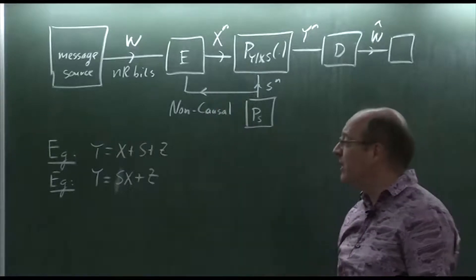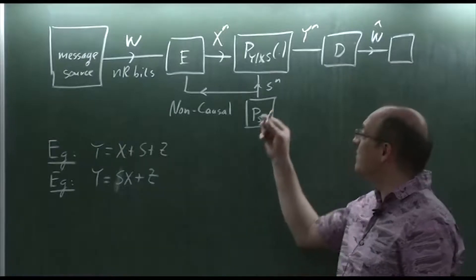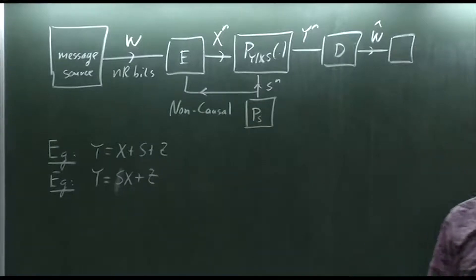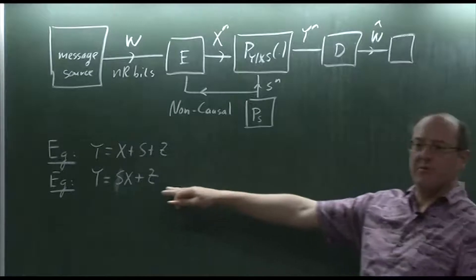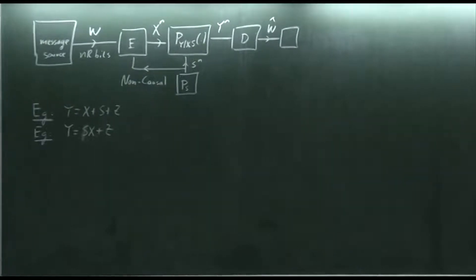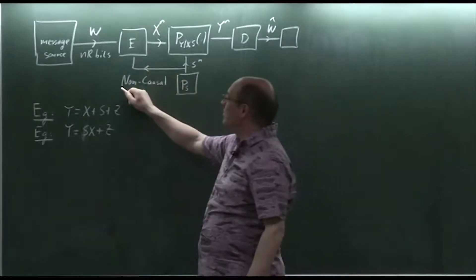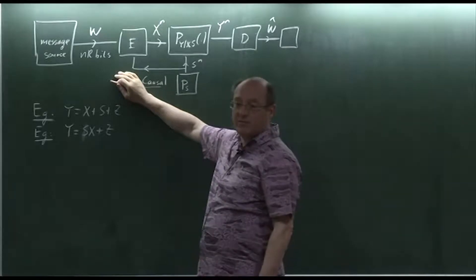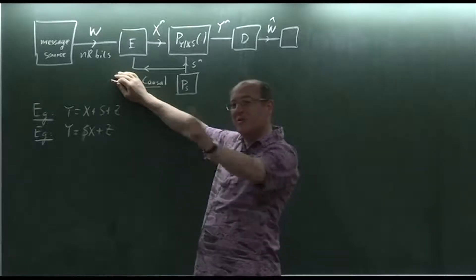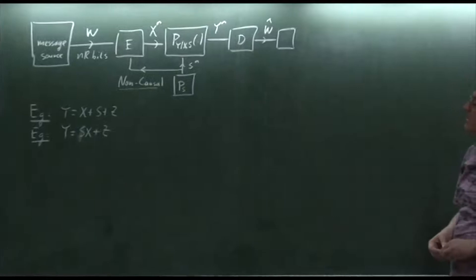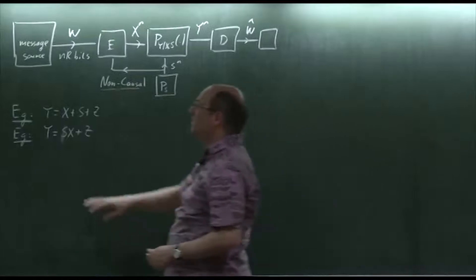If the state were available to both encoder and decoder, you'd simply subtract S, or for a fading channel it becomes water-filling over time — like OFDM water-filling over frequency. What's interesting is the non-causal availability only at the encoder. Shannon studied the causal version and solved it; the non-causal case is harder.